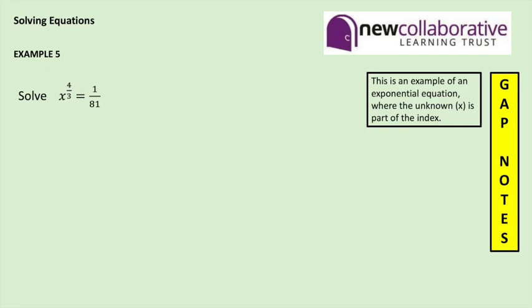This video looks at solving equations which involve indices. In example 5 we need to solve x to the power 4 over 3 equals 1 over 81.